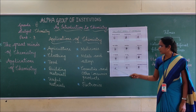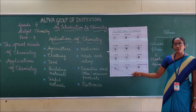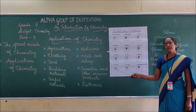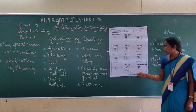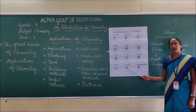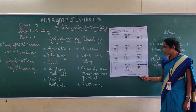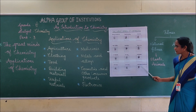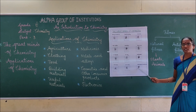S.N. Bose is best known for his work on quantum mechanics and the theory of Bose-Einstein condensate state. C.N.R. Rao worked mainly in solid state and structural chemistry. The last one, Venkatraman Ramakrishnan, is an Indian biologist and he studied the structure of ribosomes.